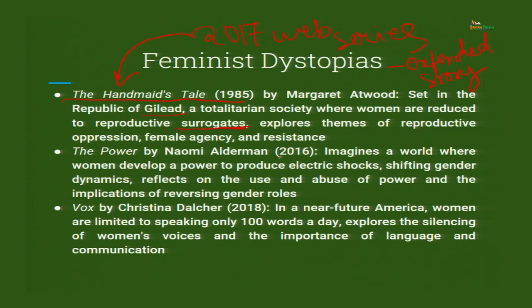The Handmaid's Tale explores themes of reproductive oppression, female agency, and resistance. The Power by Naomi Alderman, published in 2016, imagines a world where women develop the power to produce electric shocks, shifting gender dynamics. It reflects on the use and abuse of power and the implications of reversing gender roles. We discussed this as a utopian novel also, but there is a darker side: what if a woman abuses the power she has? She can give electric shocks to anybody — one thing is to use the power for safety, another is to harm other human beings.